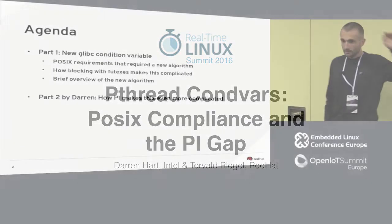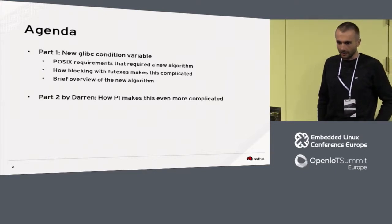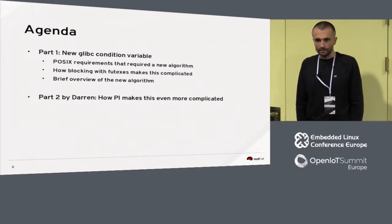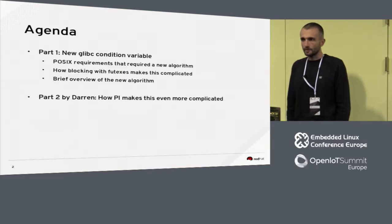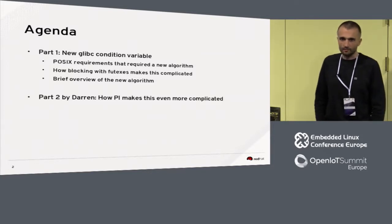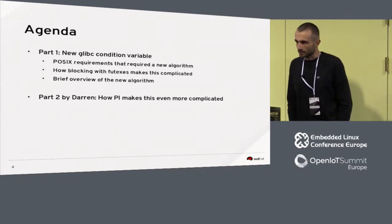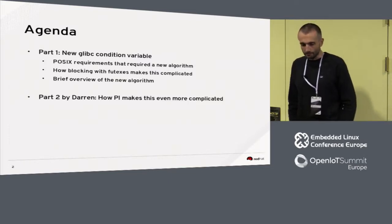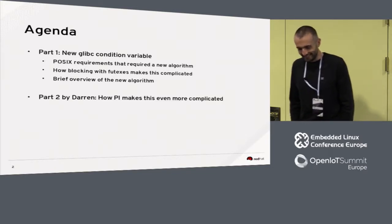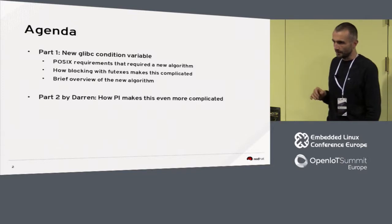I'll discuss the first part and talk about the new glibc condition variable. There were positive requirements or clarifications about positive requirements that required us to build a new algorithm. I'll talk about how blocking with futexes makes this complicated and give a brief overview of the algorithm. Darren will then do the second part, talking about the actual problem of how to support PI with the new condition variable.